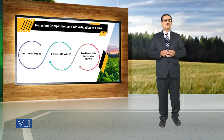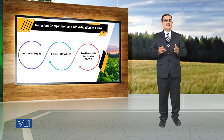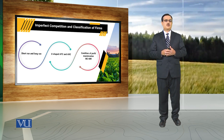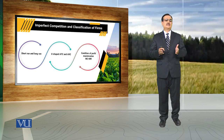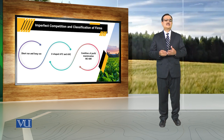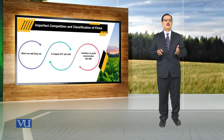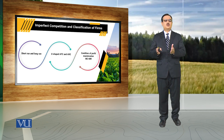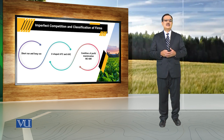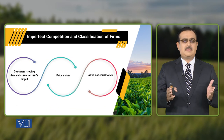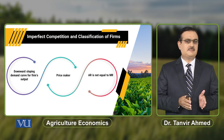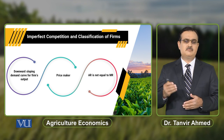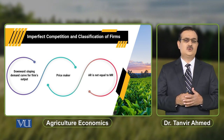In both markets, the condition for profit maximization is the same — the optimal level of output where the firm can maximize its profit is determined on the basis of the marginal cost and marginal revenue curve. The point where marginal cost equals marginal revenue is the output where the firm can maximize its profit. When comparing firms operating under imperfectly competitive and perfectly competitive markets, there are also some differences.